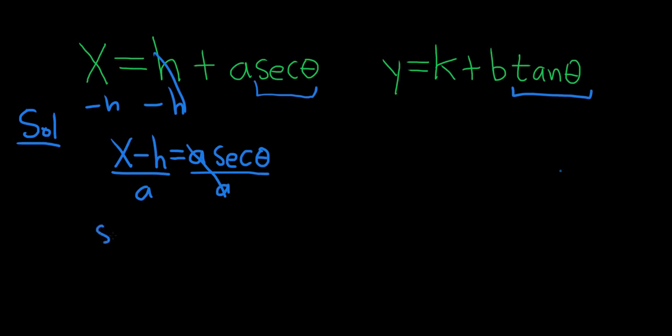I'm going to write it backwards now, like this: secant theta equals x minus h over a.